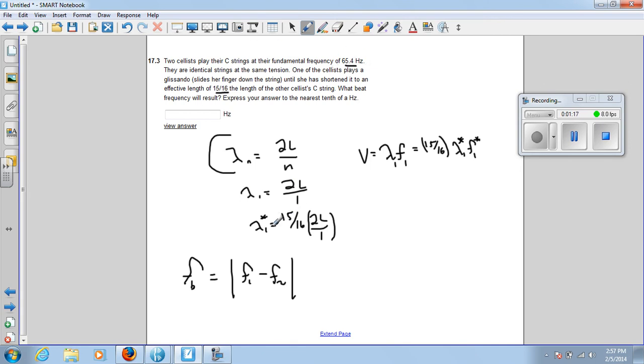For the other cellist who shortens it, then hers is going to be 15 sixteenths of 2L over 1, right, because it's shorter. So we'll call that fundamental frequency lambda 1 asterisk, which means it'll be 15 sixteenths of lambda 1.